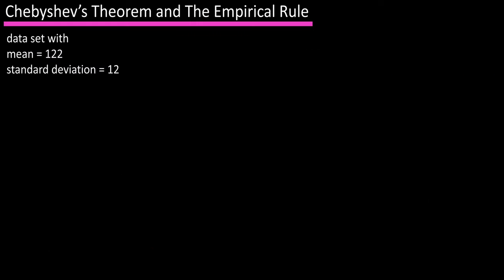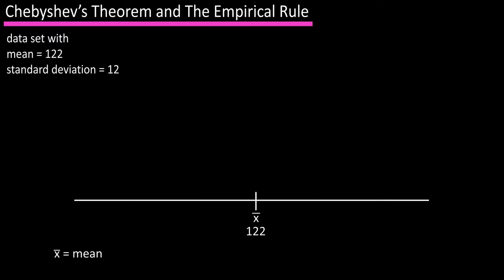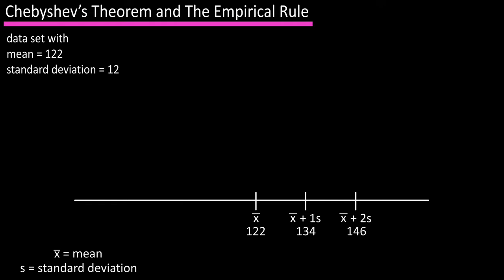Let's say we have a data set with a mean of 122 and a standard deviation of 12. We can draw a number line and mark x-bar, the mean of 122, in the middle. One standard deviation to the right is 134 (x-bar plus 1s), two standard deviations to the right is 146 (x-bar plus 2s), and three standard deviations to the right is 158 (x-bar plus 3s). One standard deviation to the left is 110, two is 98, and three is 86.